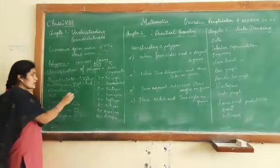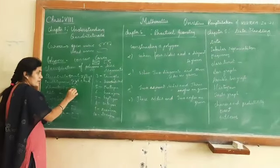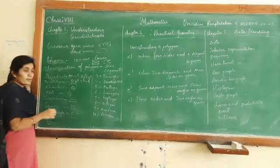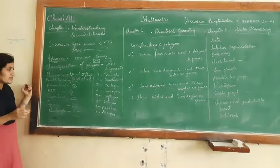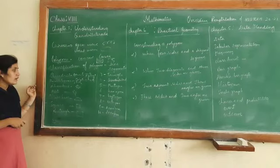Rhombus: all four sides are equal and diagonals bisect each other perpendicularly.